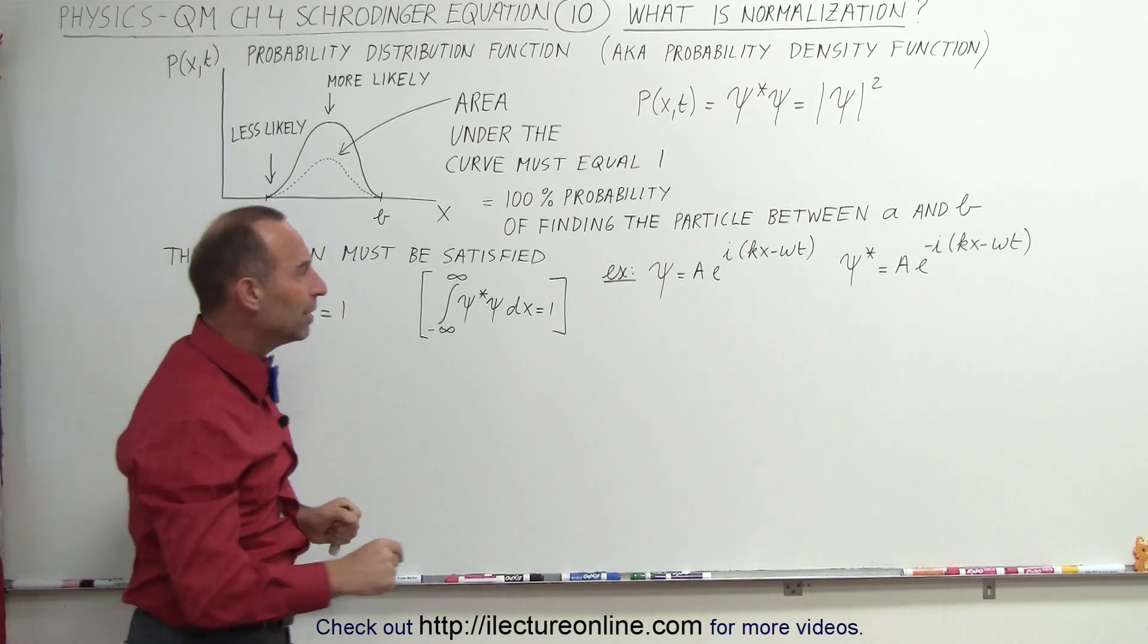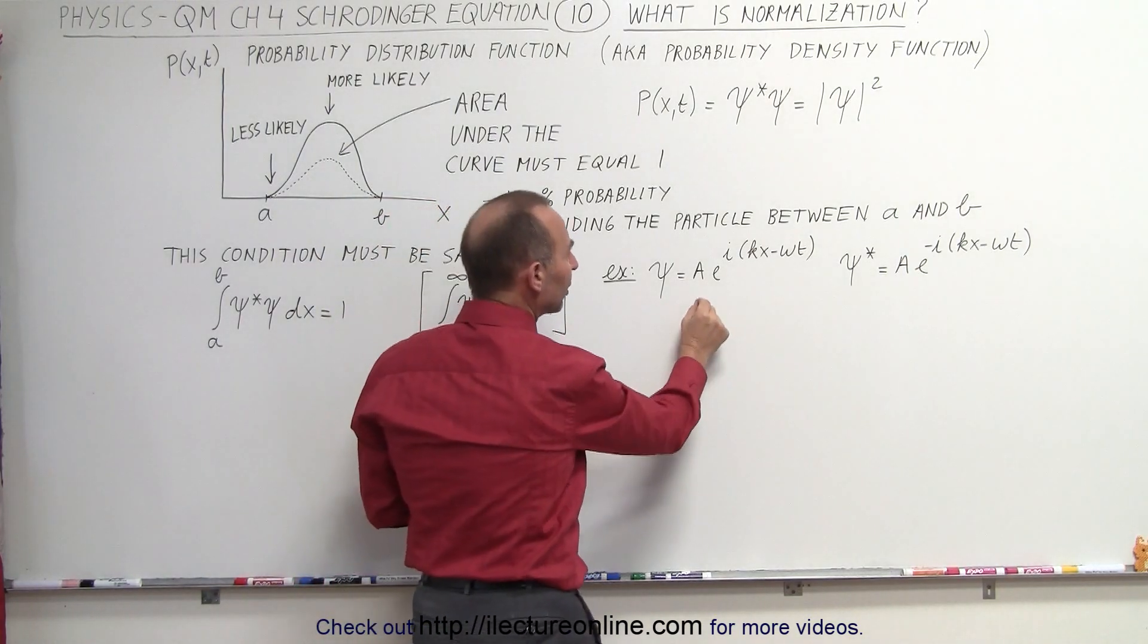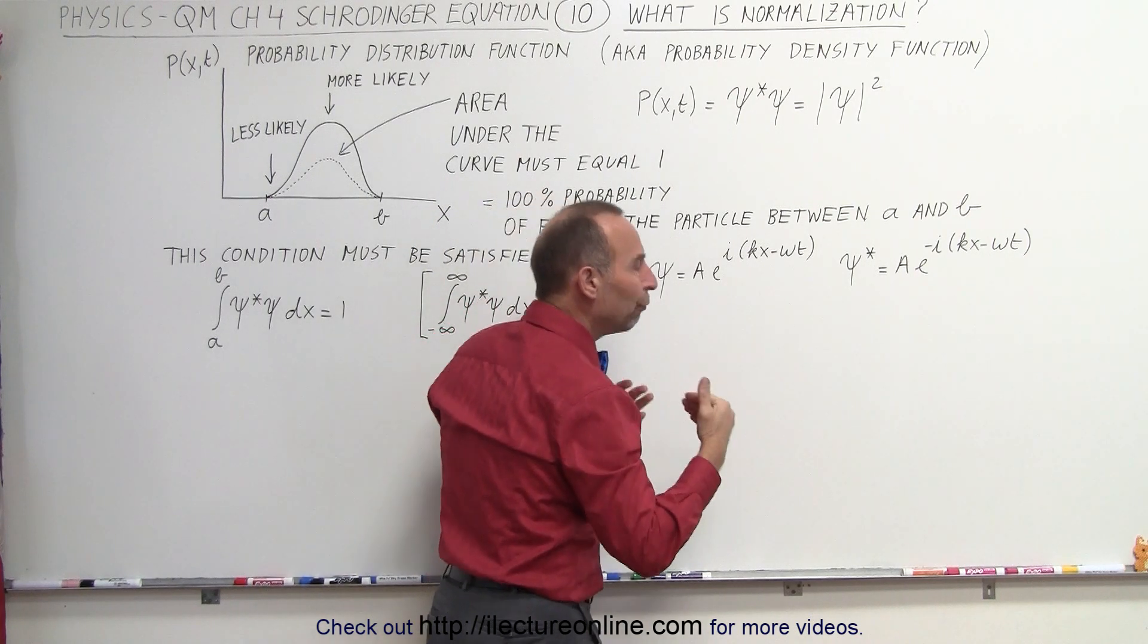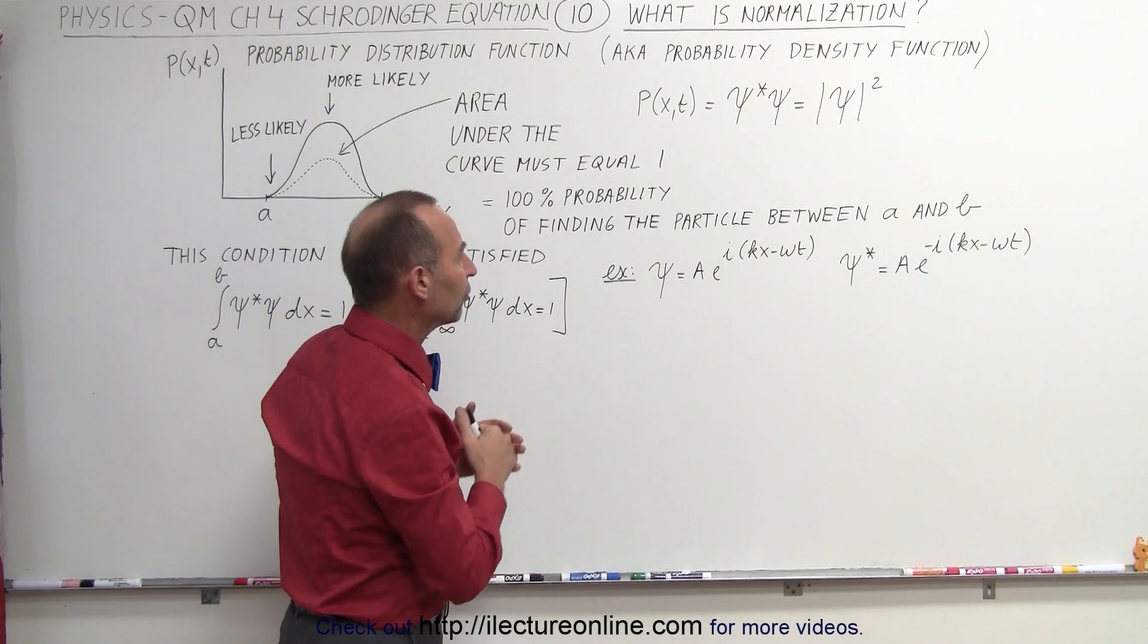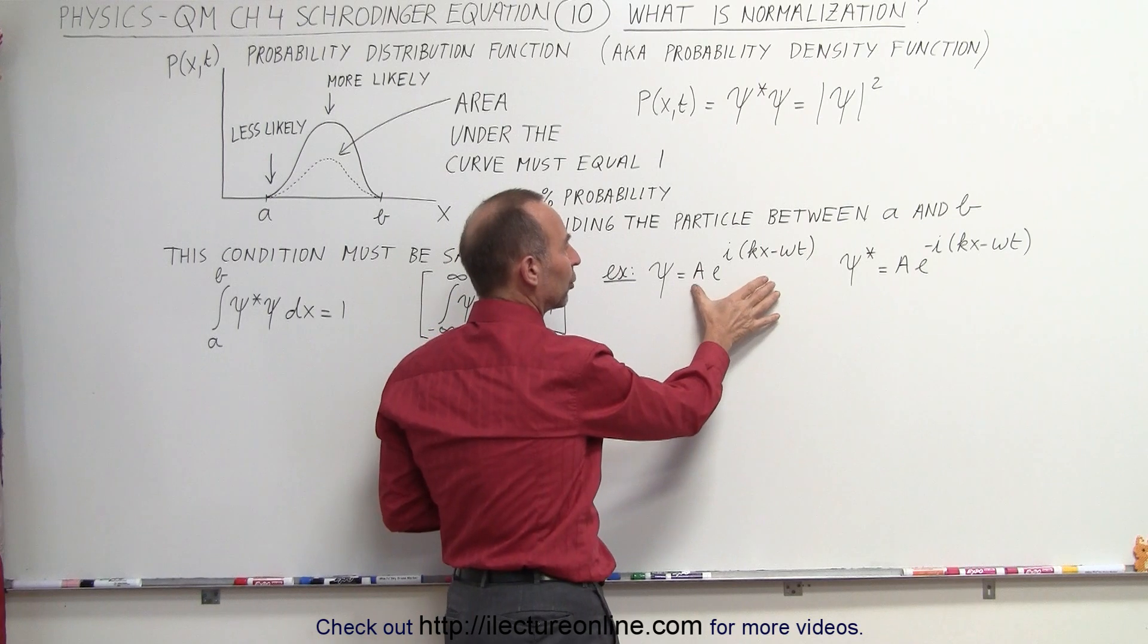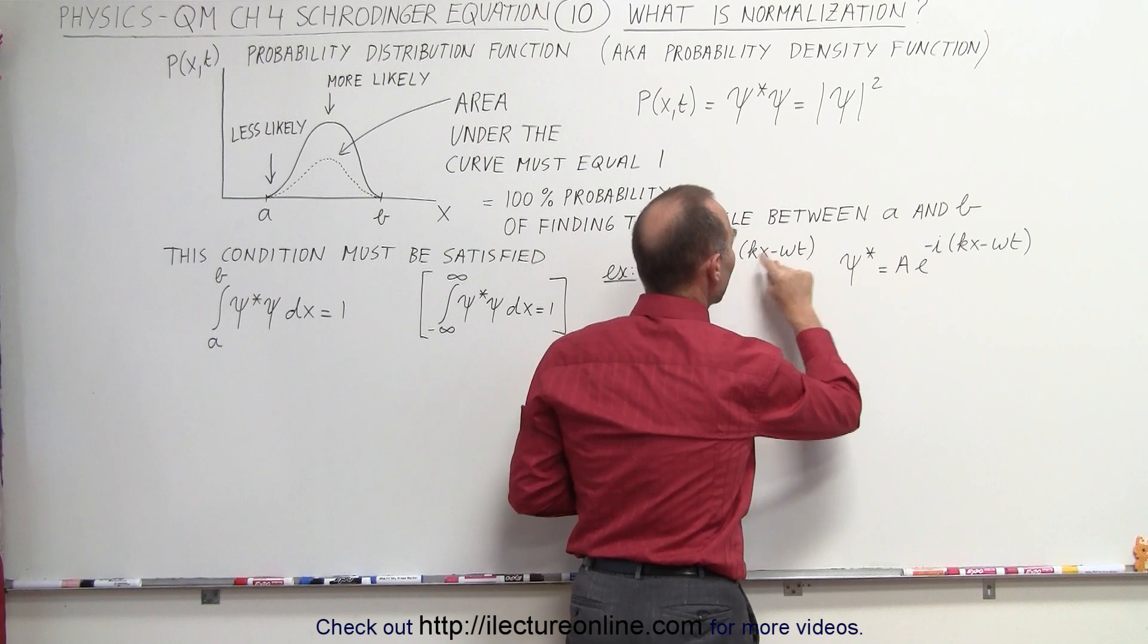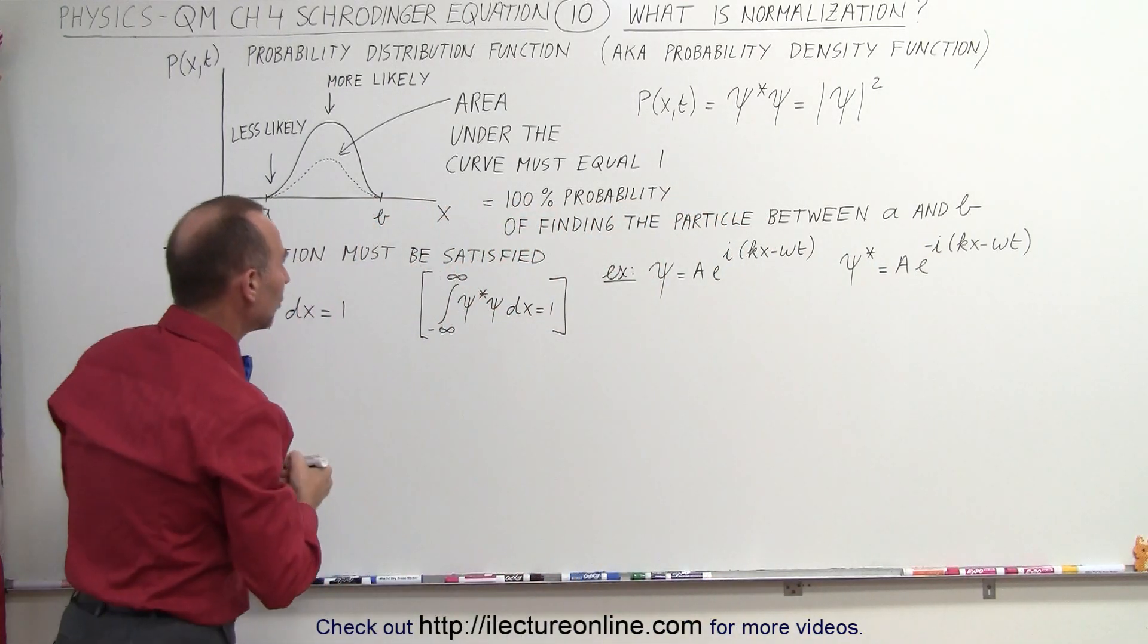So let's go back to the wave function that we had in the previous videos, which represented a single particle in one dimension that had no forces acting on it and the potential energy was constant. If we take that, this would be a good function to describe that, a good wave function, and this would be the complex conjugate. All we did was change the sign of the imaginary number i. Now, when we take the product of that, what do we get?